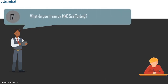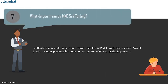The next question is: what do you mean by MVC scaffolding? Scaffolding is a code generation framework for ASP.NET web applications. Visual Studio includes pre-installed code generators for MVC and Web API projects. You can add scaffolding to your projects when you want to quickly add code that interacts with data models. Using scaffolding reduces the amount of time used to develop standard data operations. It consists of page templates, entity page templates, field page templates, and filter templates — called scaffold templates — that allow you to quickly build a functional data-driven website.